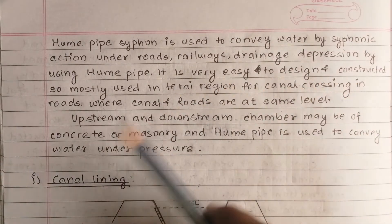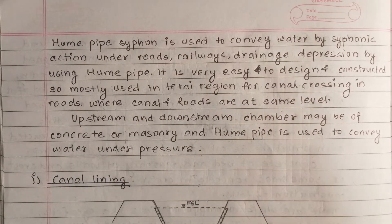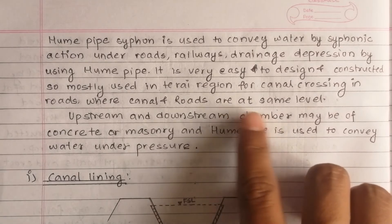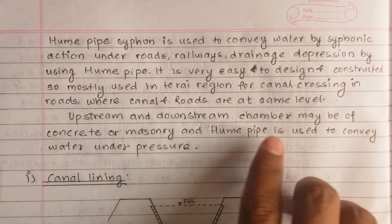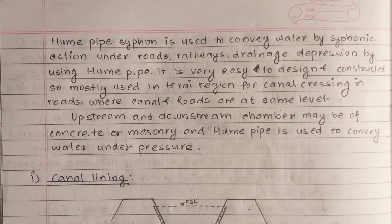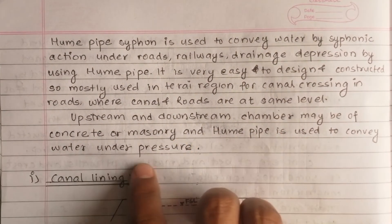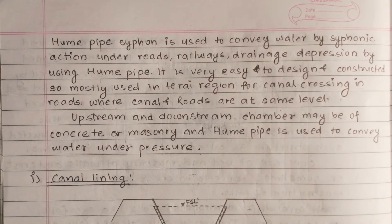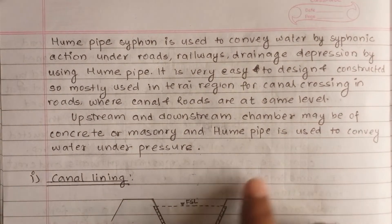It is very easy to design and construct, so it is mostly used in hilly regions for canal crossing in roads where the canal and roads are not at the same level. To cross the canal, an impact siphon is constructed. Upstream and downstream chambers may be of concrete or masonry, and a hume pipe is used to convey water under pressure.